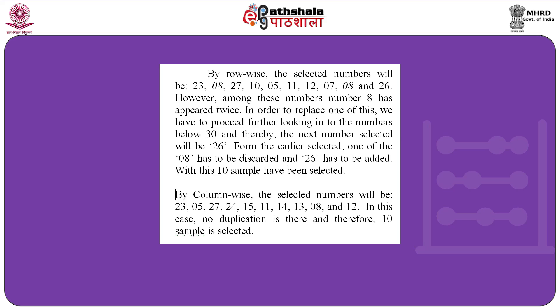If following column-wise selection, the selected numbers will be 23, 5, 27, 24, 15, 17, 14, 13, 8, and 12. In this case there is no duplication, and therefore 10 samples are selected. One can use either of these samples for further study.